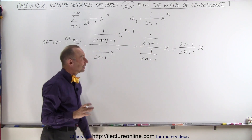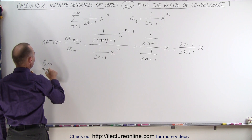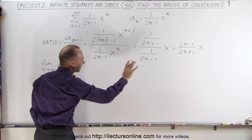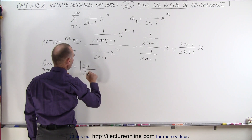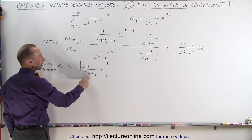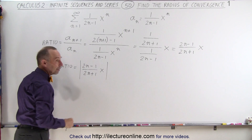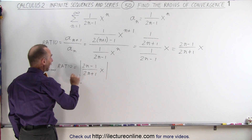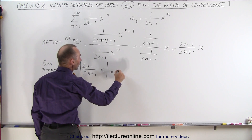Now we're ready to find the limit. The limit as n goes to infinity of the ratio — taking the absolute value — gives us |( 2n minus 1) over (2n plus 1) times x|. As n becomes very large, the minus 1 in the numerator and the plus 1 in the denominator become insignificant, so we simply get 2n divided by 2n, which goes to 1, and this simply becomes equal to |x|.